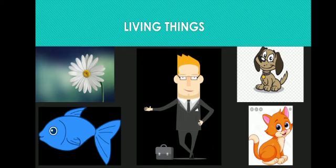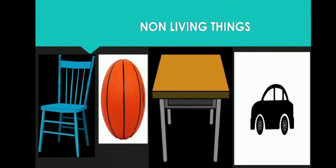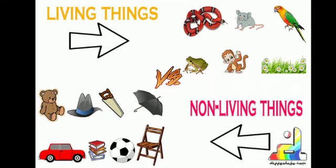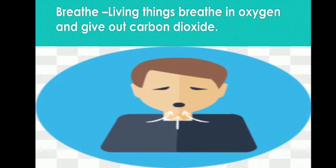Examples of living things are flowers, fish, human beings, dog, cat, etc. Examples of non-living things are chair, ball, table, car, etc. We see many differences between living things and non-living things.